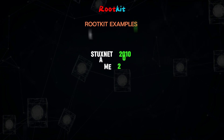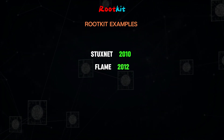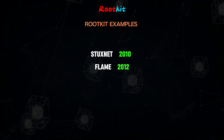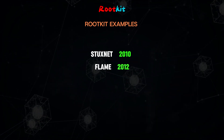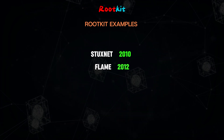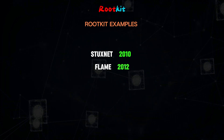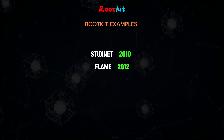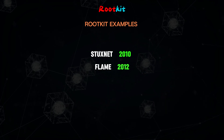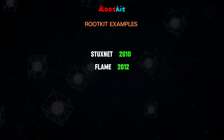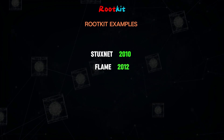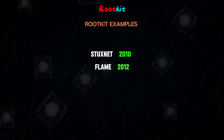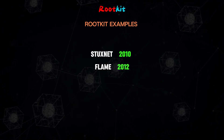In 2012, cybersecurity experts discovered Flame, a rootkit primarily used for cyber espionage in the Middle East. Flame, also known as Flamer and SkyWiper, affects the computer's entire operating system, giving it the ability to monitor traffic, capture screenshots and audio, and log keystrokes from the device. The hackers behind Flame were not found, but research suggests they used 80 servers across three continents to access infected computers.